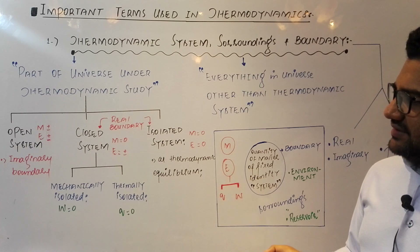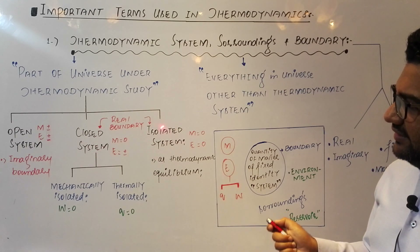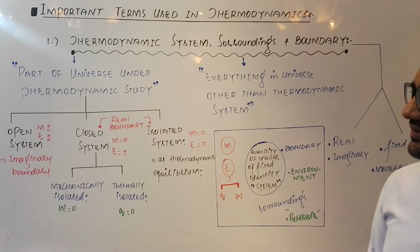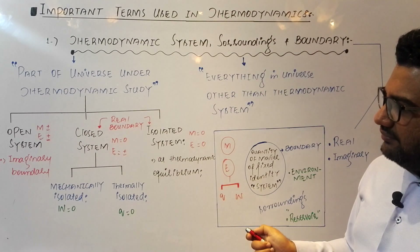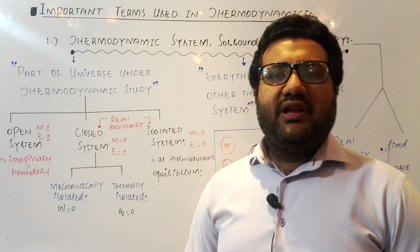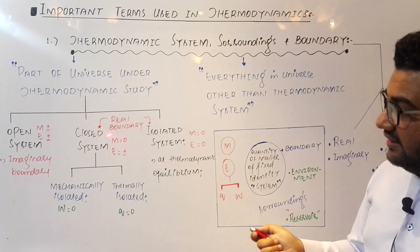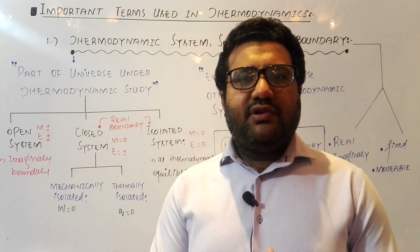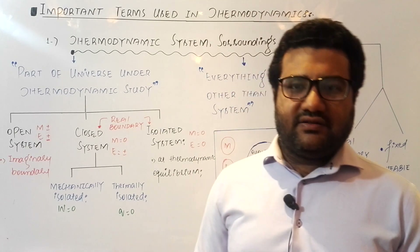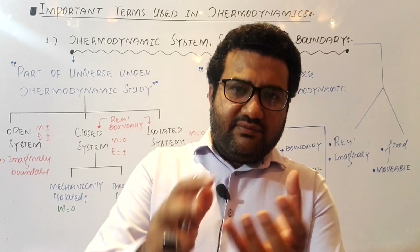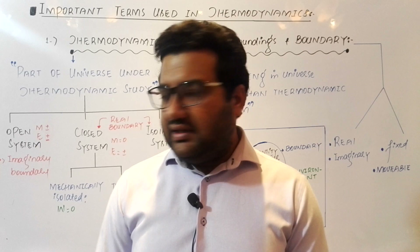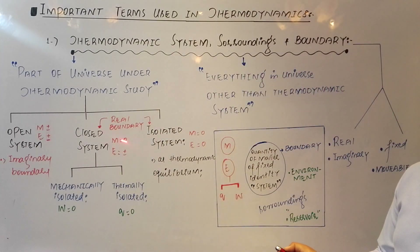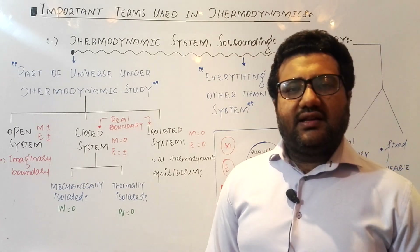The second system is the closed system. In closed and isolated systems, you will see a real boundary between the system and surroundings. In a closed system, matter is not exchanged between the system and the surroundings, but energy can be exchanged. For example, tea in a sealed bottle where vapors cannot escape but energy exchange can take place is an example of a closed system. Because mass remains constant, the closed system is sometimes called the controlled mass system.